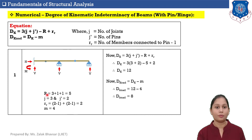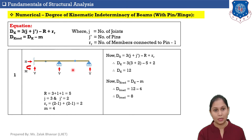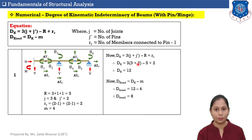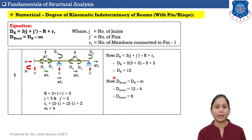Putting values into the DK equation: DK equals 3 times (J plus J') minus R plus RR equals 3 times (3 plus 2) minus 5 plus 2 equals 3 times 5 minus 5 plus 2 equals 15 minus 5 plus 2 equals 12. This means a total of 12 displacements are possible in the given beam.